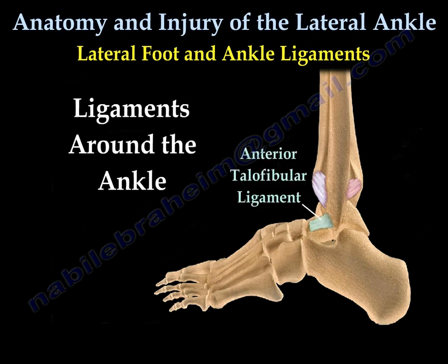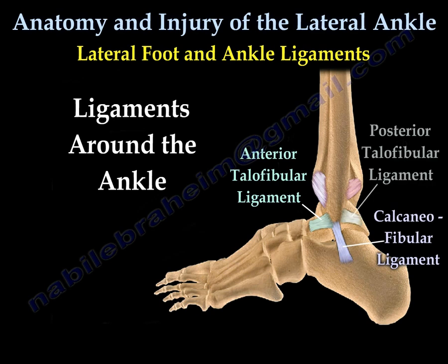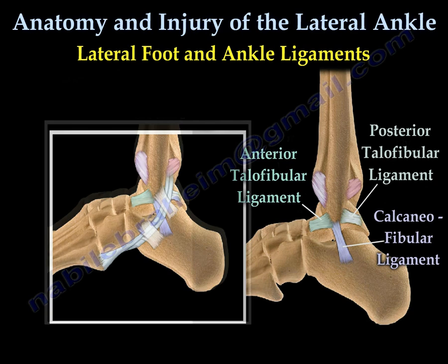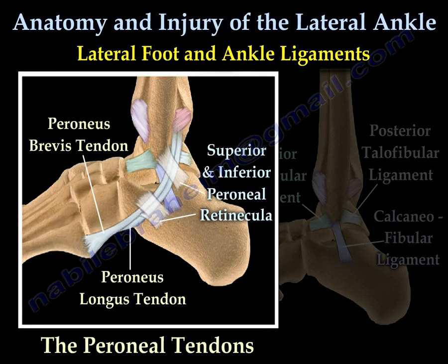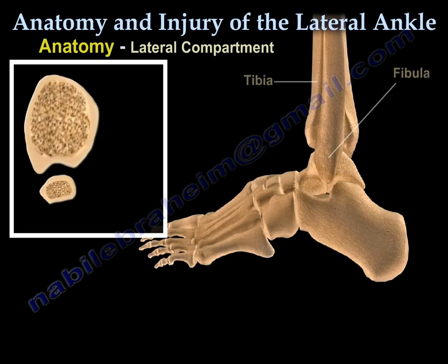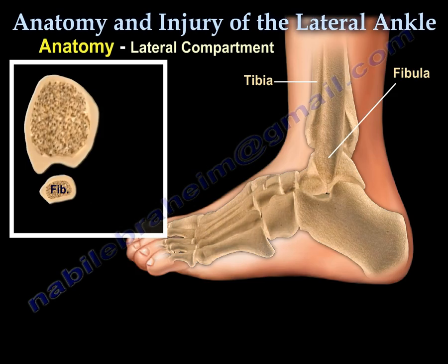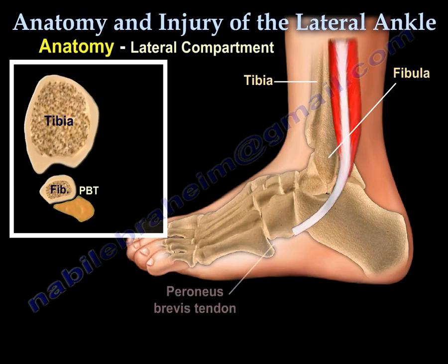Ligaments around the ankle also include the anterior talofibular ligament, the calcaneofibular ligament, and the posterior talofibular ligament. Here you can see the peroneal tendons, which run behind the fibula within the lateral compartment of the ankle. You can see the peroneus brevis tendon.